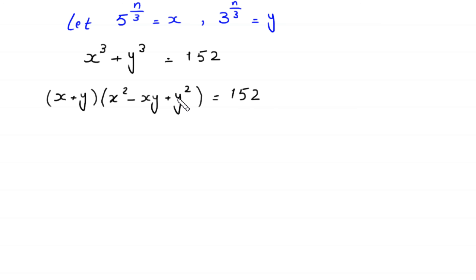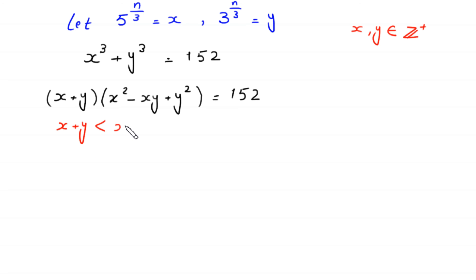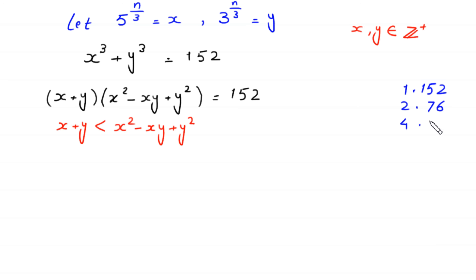According to algebraic identity, x cubed plus y cubed can be factorized as (x + y)(x² − xy + y²) = 152. Since x and y are positive integers, x + y is smaller than x² − xy + y². So 152 can be factorized as 1×152, 2×76, 4×38, and 8×19, giving us four cases to consider.